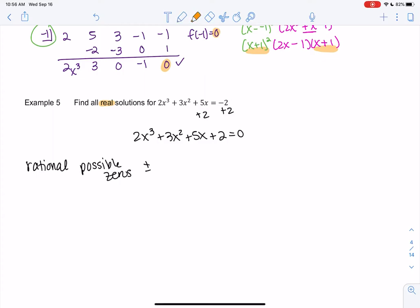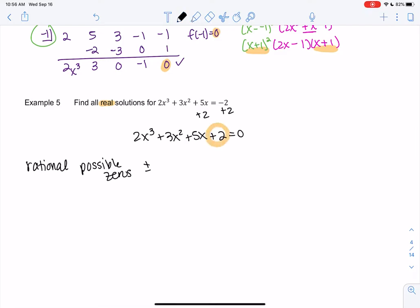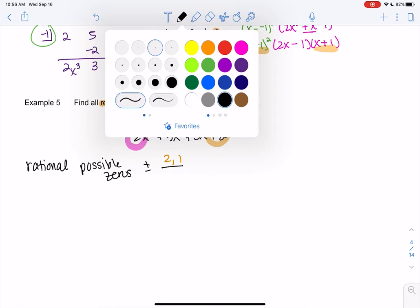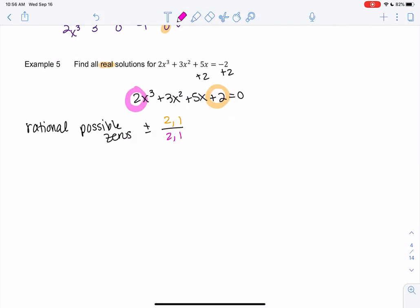So what are my possible zeros? So it'll be factors of 2. So on top we'll have 2 or 1, divided by factors of also 2 from the 2, the leading coefficient. So this brings me to plus or minus 2 over 2, plus or minus 1 over 2, plus or minus 2 over 1, and plus or minus 1 over 1. So what do we have? Plus or minus 1, plus or minus 2, and then plus or minus 1 half.